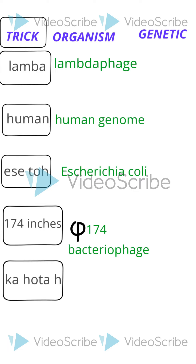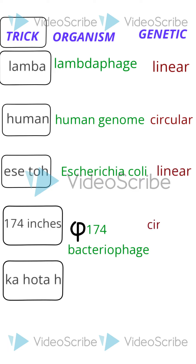So let's talk about the shape. The trick is LC-LC. L stands for Linear and C stands for Circular. So the pattern is: linear, circular, linear, and then again circular — LC-LC.